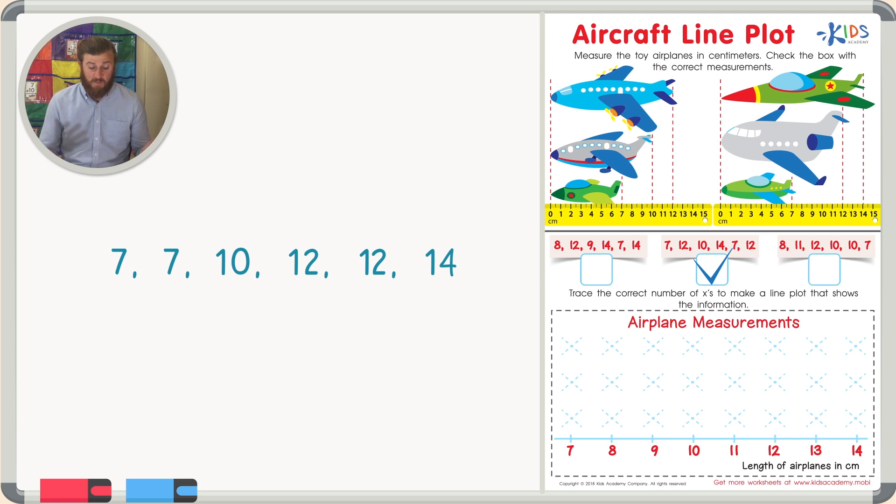So let's represent our airplanes on this line plot. So I know that there's two sevens. And each X represents one airplane, so under seven, I'll trace two X's. The next number we come across is eight, except none of my toy airplanes were eight centimeters long. So I'm going to go ahead and leave eight blank. The same thing goes for nine. None of my toy airplanes were nine centimeters long. So again, I'm not going to trace any X's because none of my airplanes were nine centimeters long. What about 10 centimeters long? How many airplanes were 10 centimeters long? Just one. So how many X's are there? Just one. Let's go ahead and trace one X right above 10. How many airplanes were 11 centimeters long? None. So no X's under 11.